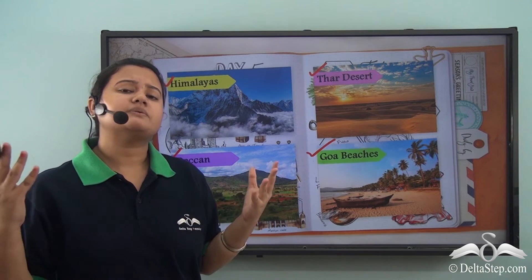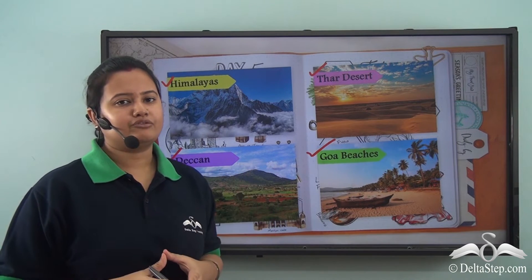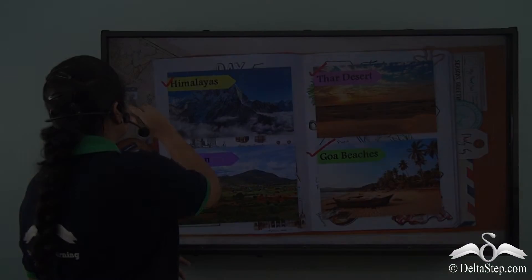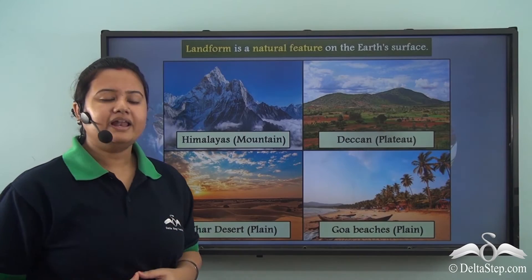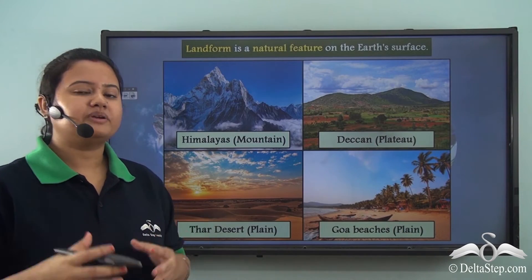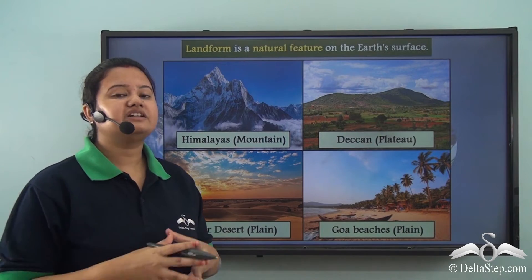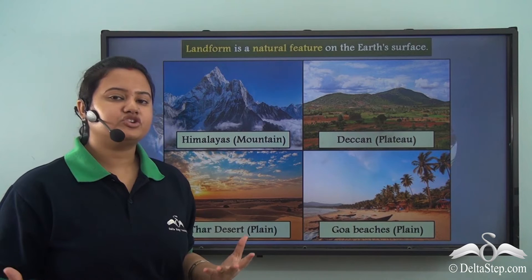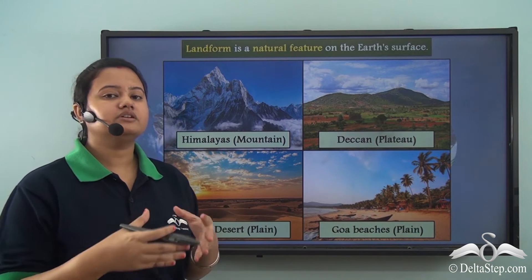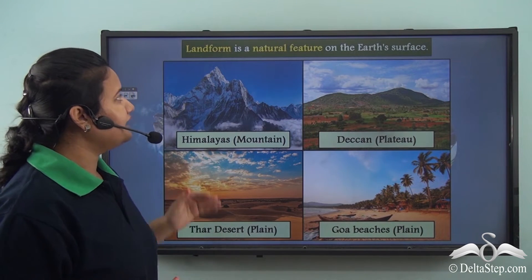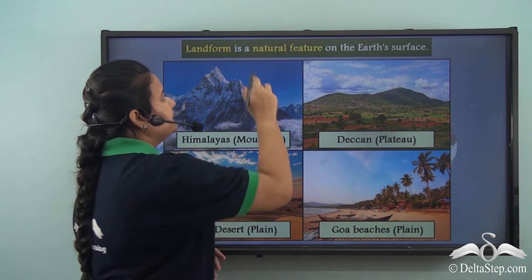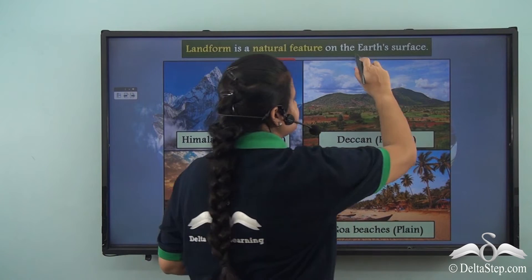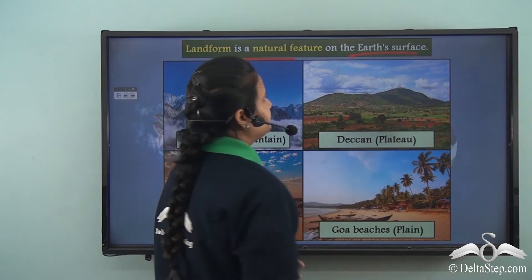Now, what is meant by a landform? A landform is a physical feature that forms naturally on the earth's surface. So a landform is a natural feature on the earth's surface.